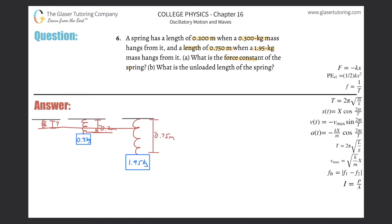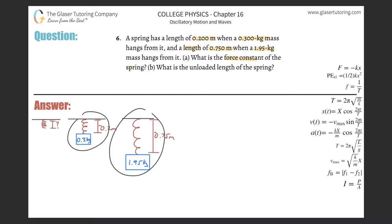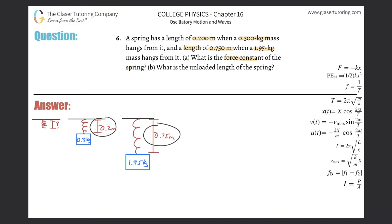To find the spring constant, I would need the displacement from the unstrained length for each scenario. Interestingly though, we have these two examples and we know there is a certain change in length of the spring between them with two different masses. What I can actually do is use Hooke's law but manipulate it slightly: the change in force that the spring is exerting will be equal to negative k multiplied by the change in total displacement of the spring.